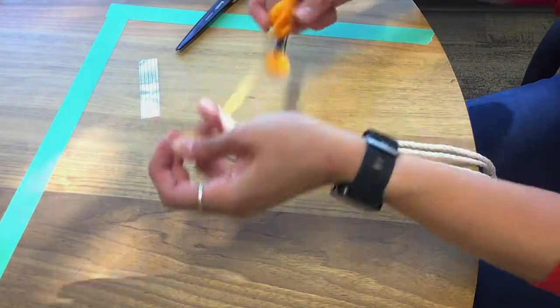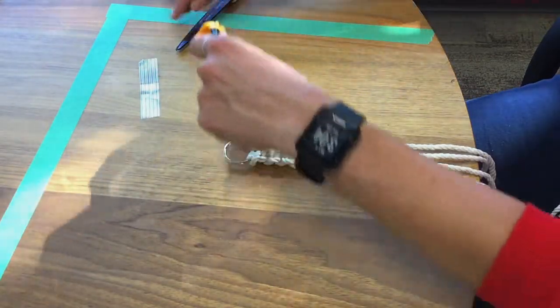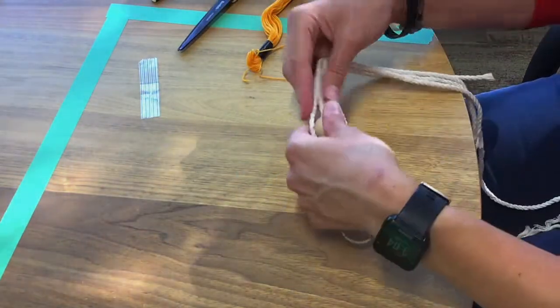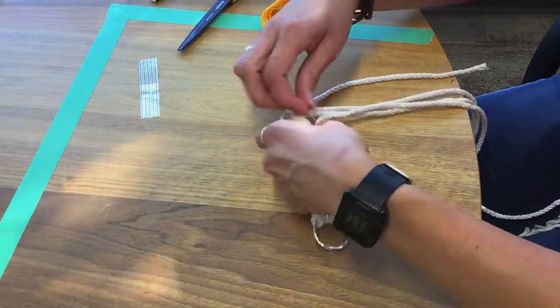Take your colored floss. You are just going to be wrapping it around the end at the bottom of your wooden bead. You are going to have to figure out how to hold it and what will work best for you.